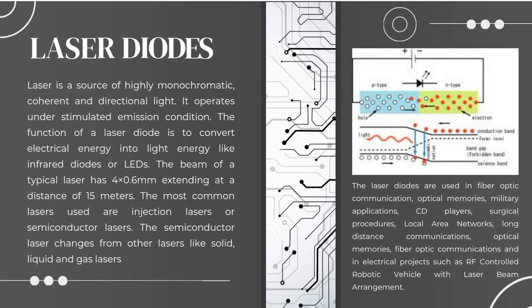Laser Diodes. Laser is a source of highly monochromatic, coherent, and directional light. It operates under stimulated emission conditions. The function of a laser diode is to convert electrical energy into light energy, like infrared diodes or LEDs. The beam of a typical laser is 4 by 0.6 millimeters, extending at a distance of 15 meters. The most common lasers used are injection lasers or semiconductor lasers, which differ from other lasers such as solid, liquid, and gas lasers.